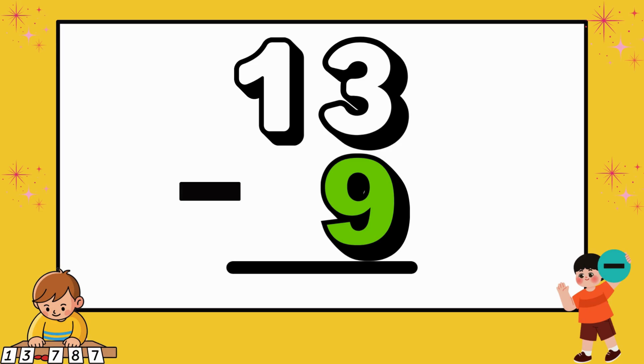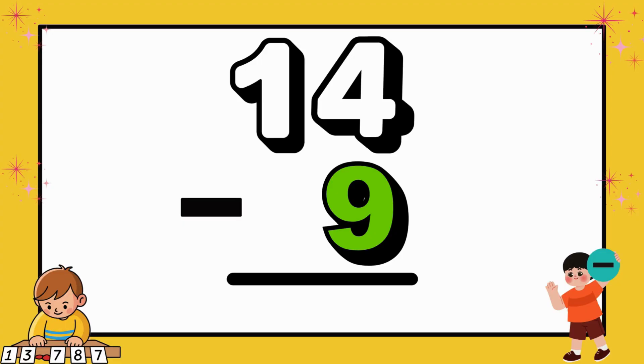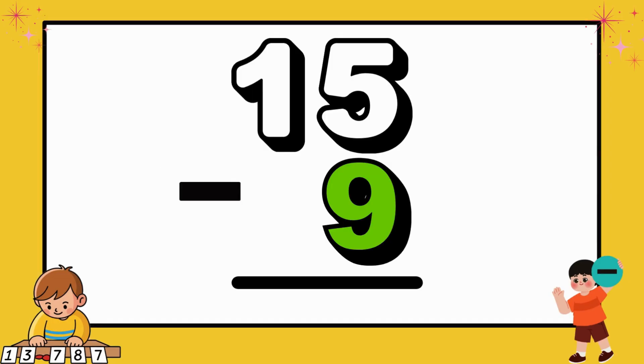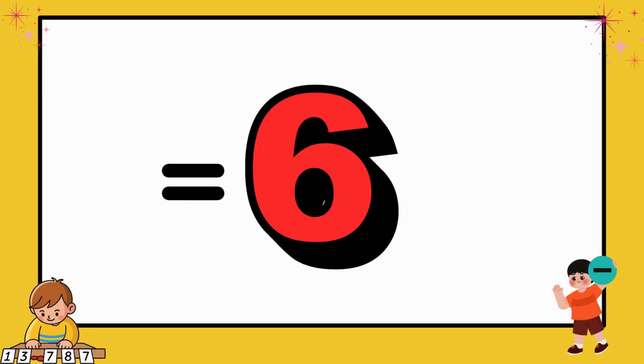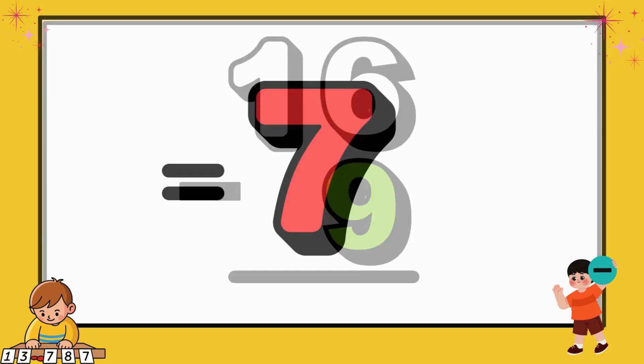Now, 13 minus 9 equals 4. Moving on, 14 minus 9 equals 5. Continuing, 15 minus 9 equals 6. From there, 16 minus 9 equals 6.